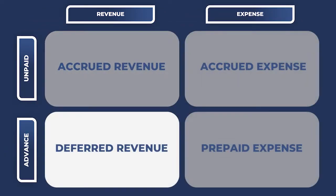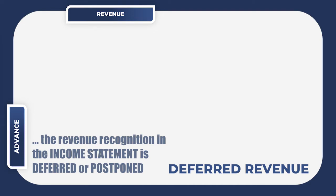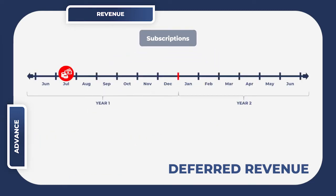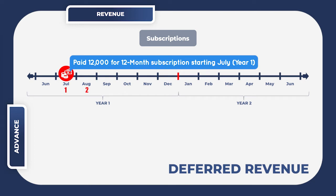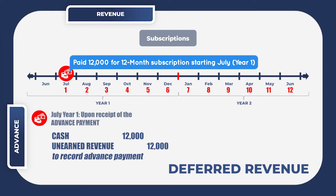A deferred revenue is the opposite of accrued revenue. It is when the company receives money from a customer in advance but the related goods or services are delivered or rendered in a different period. It is called deferred revenue because the revenue recognition in the income statement is deferred to the next period. An example of deferred revenue are subscription payments for magazines that companies receive in advance. In this business model, customers can normally pay one year in advance, meaning the company will regularly receive cash for services yet to be performed — the delivery of magazines in future periods. Upon receipt of cash, the entry is a debit to cash and a credit to a liability account called unearned revenue.